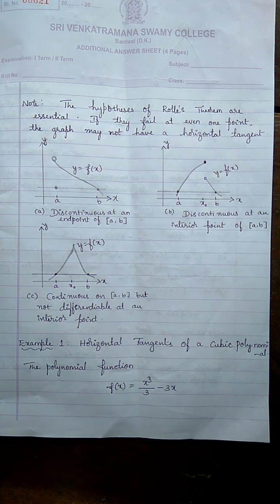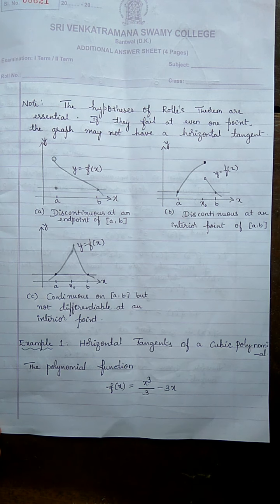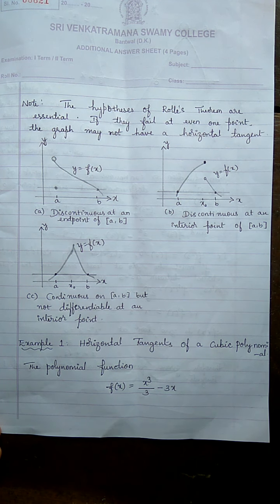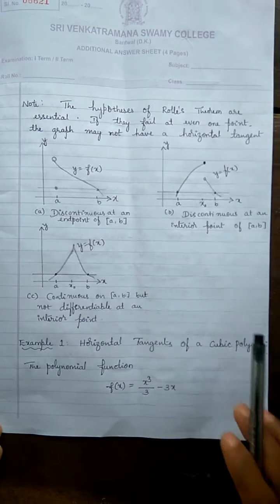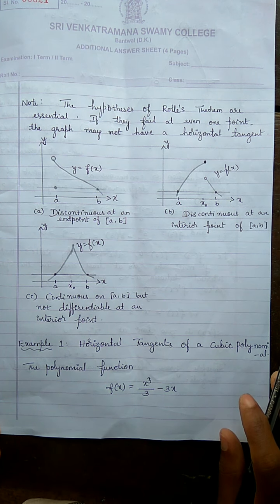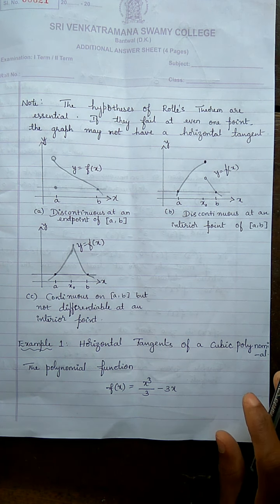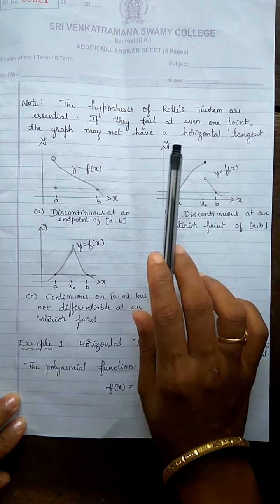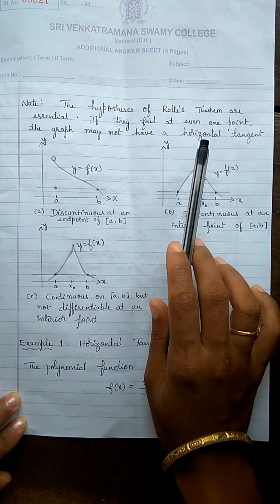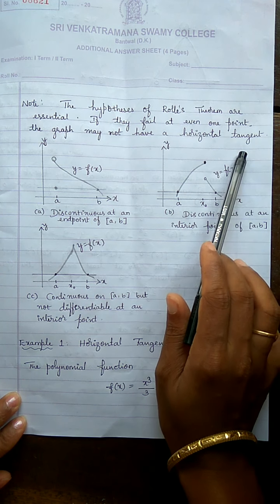Now we shall see one important note: the hypotheses of Rolle's theorem are essential. The function must be continuous and differentiable at every point, as well as differentiable at every point of its interior. If these hypotheses fail at even one point — whether the function is not differentiable or not continuous at that point — then the graph may not have a horizontal tangent.